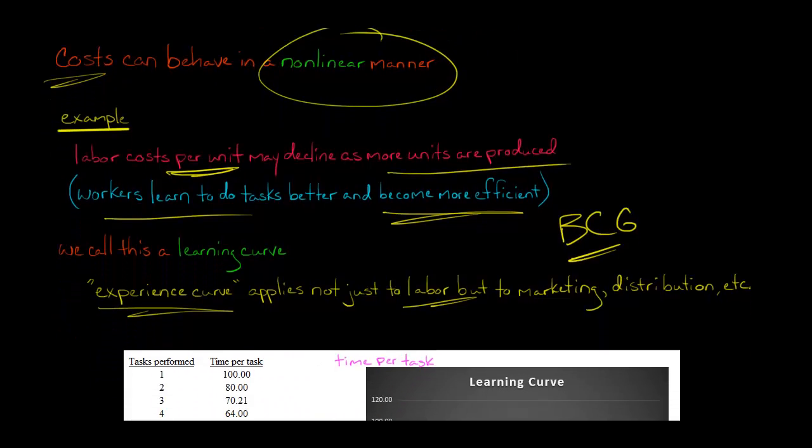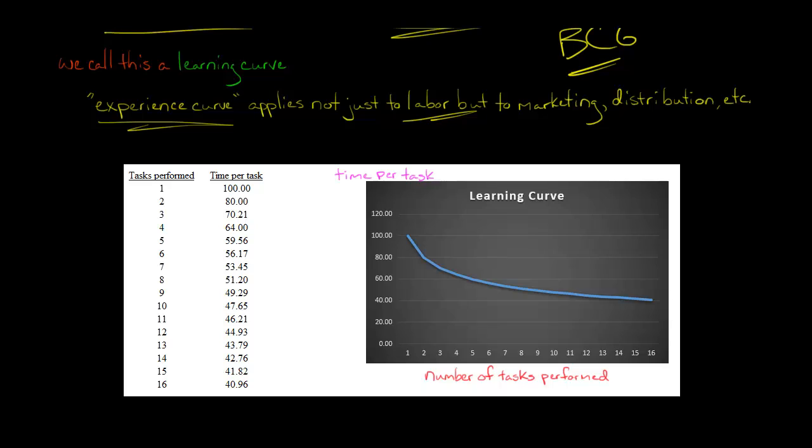Let's get back to the learning curve. I've got some numbers here, an example. We've got a couple columns: tasks performed - so you perform one task, then you do it a second time, third time, etc., all the way up to 16. And then we have the amount of time, let's say in hours, to perform a task. Time per task is on the axis here.